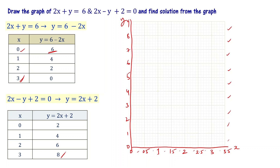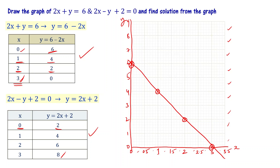Now let's plot the data for the first equation: the point (0, 6), the point (1, 4), the point (2, 2), and the point (3, 0). Connecting these gives a straight line. For the second equation: the point (0, 2), the point (1, 4), the point (2, 6), and the point (3, 8). Draw a straight line passing through these points.